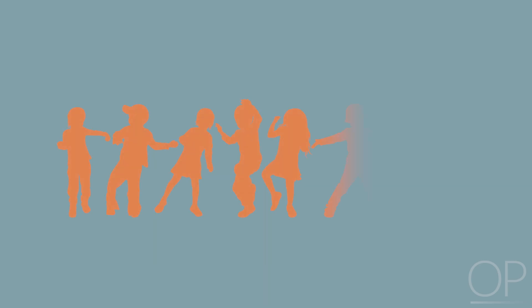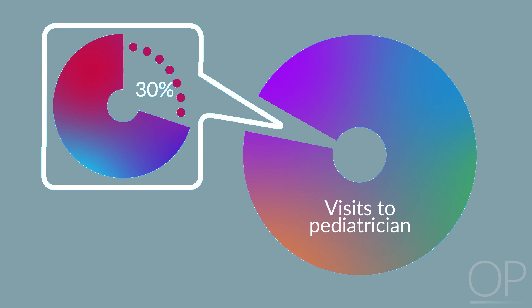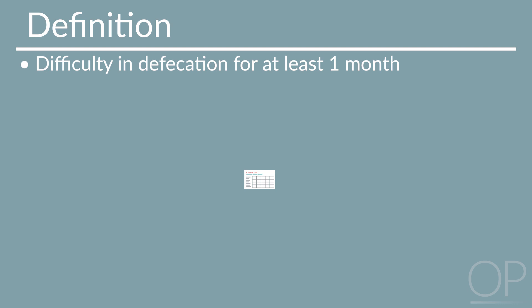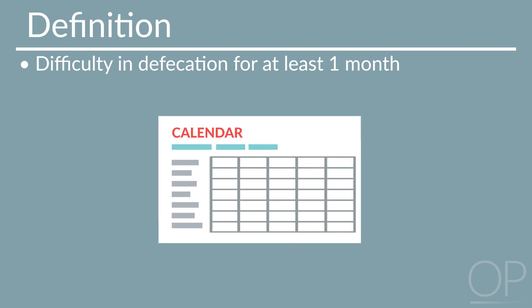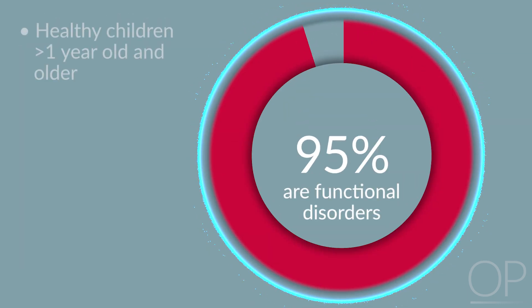Constipation is a common health problem in pediatric patients. It affects up to 30% of children and accounts for 3-5% of all visits to pediatricians. Constipation is defined as difficulty in defecation for at least one month. About 95% of cases in healthy children one year and older are functional disorders due to voluntary withholding, with no identifiable pathologic condition.